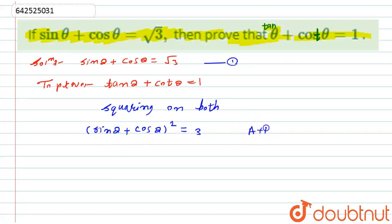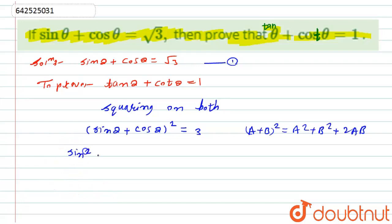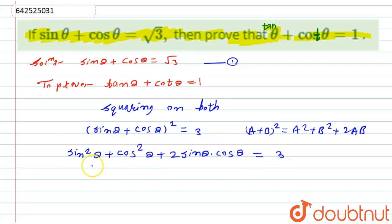I will open this using the formula (a + b)² = a² + b² + 2ab. So the expression becomes sine squared theta plus cos squared theta plus two sine theta into cos theta equals three. Now sine squared theta plus cos squared theta equals one, so it becomes one plus two sine theta cos theta equals three.